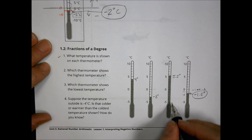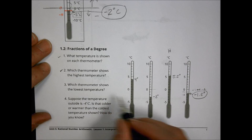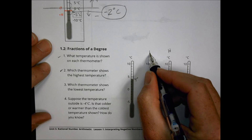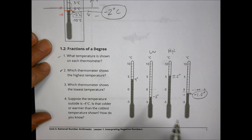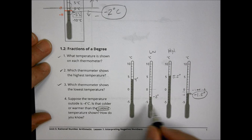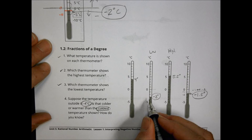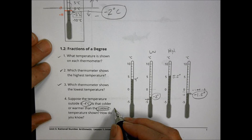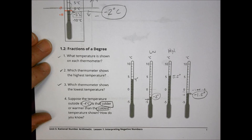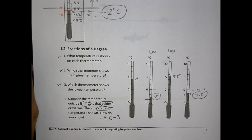Which temperature shows the highest temperature, the greatest value? That's going to be 5.5 degrees — our highest value. The lowest temperature is negative 3 degrees. Suppose the temperature outside is negative 4 degrees Celsius — is that colder or warmer than the coldest temperature shown? Our coldest is negative 3, and negative 4 is located further down, so it would be colder. Negative 4 is actually less than negative 3 in terms of its value.